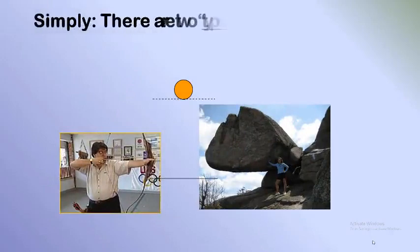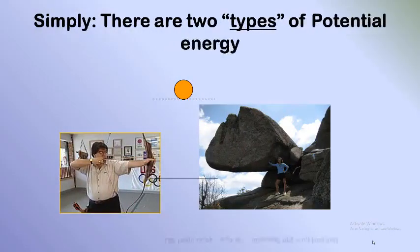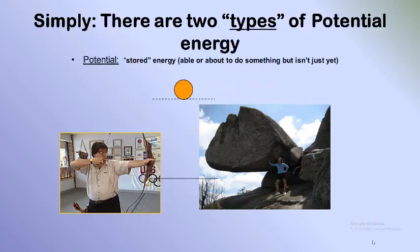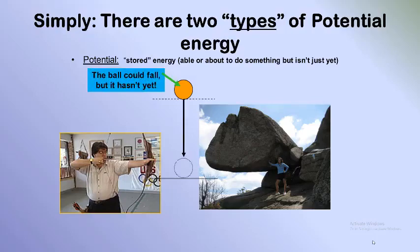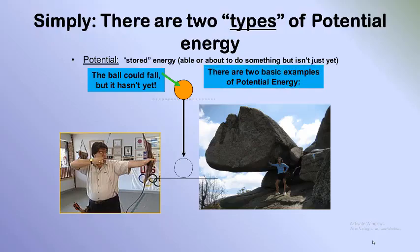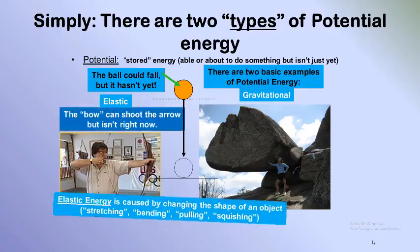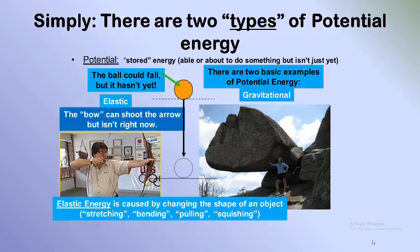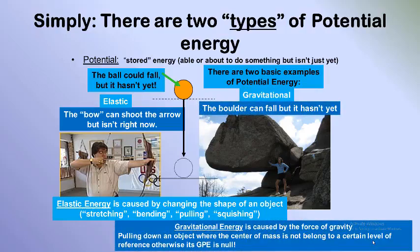Simply, there are two types of potential energy. The word 'potential' means stored — stored energy means able to do something but not yet doing it. This ball could fall but hasn't yet. For elastic energy: the bow can shoot the arrow but isn't right now. Elastic energy is caused by changing the shape of an object — stretching, bending, pulling, or compressing. For gravitational potential energy: the boulder can fall but hasn't yet. Gravitational potential energy is caused by the force of gravity pulling down on an object while it is held up.